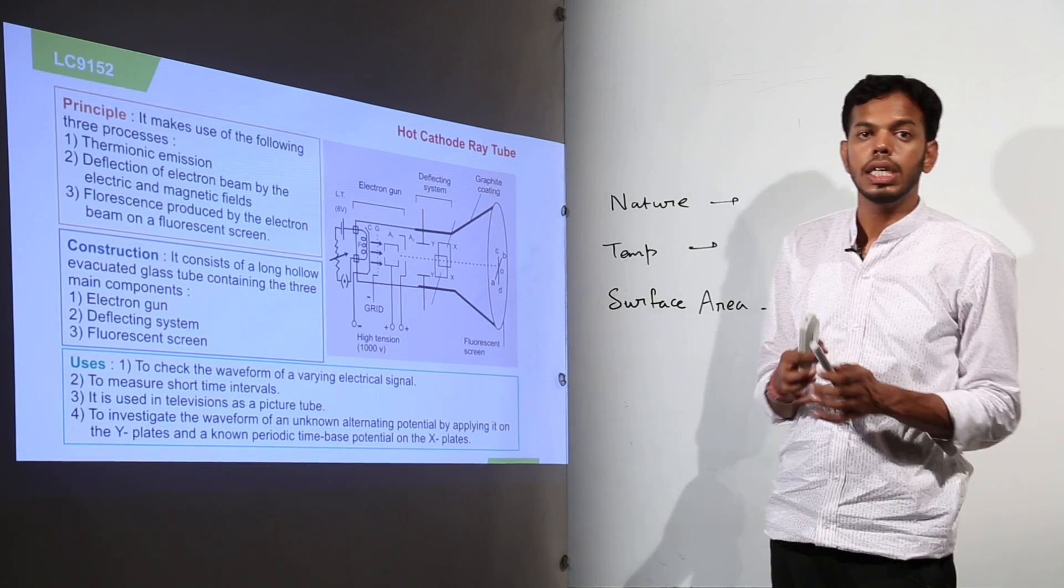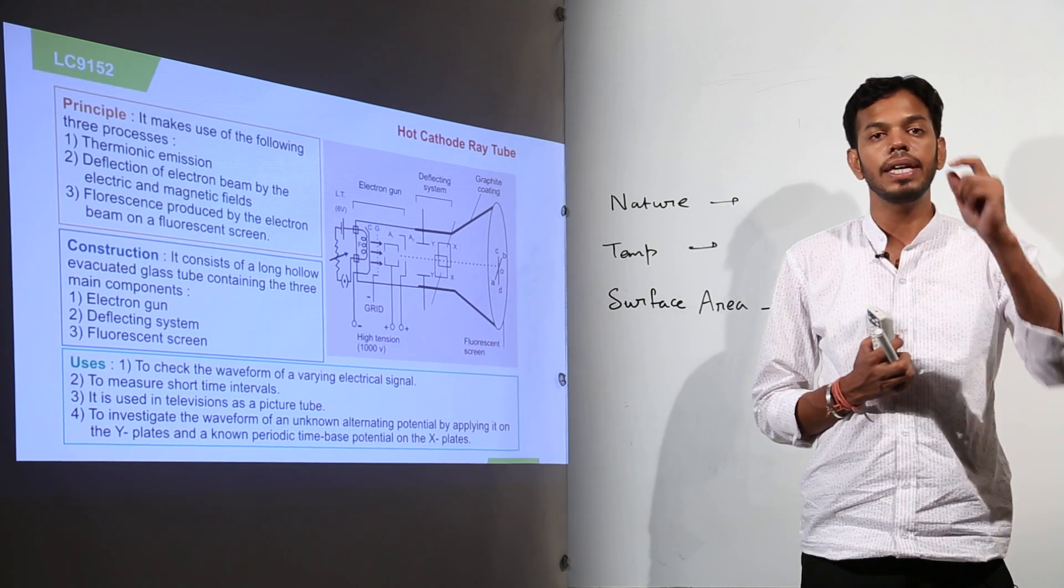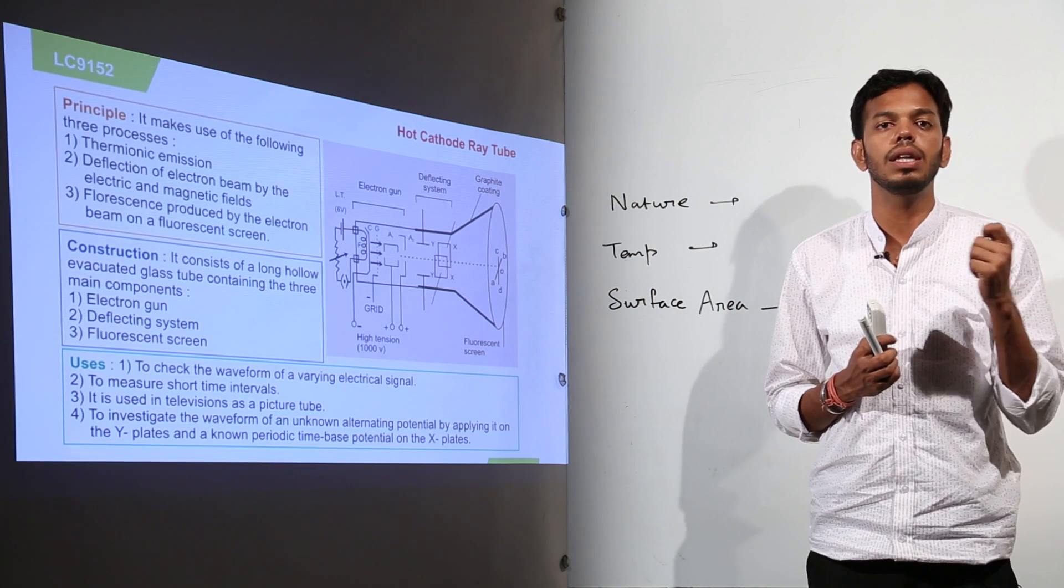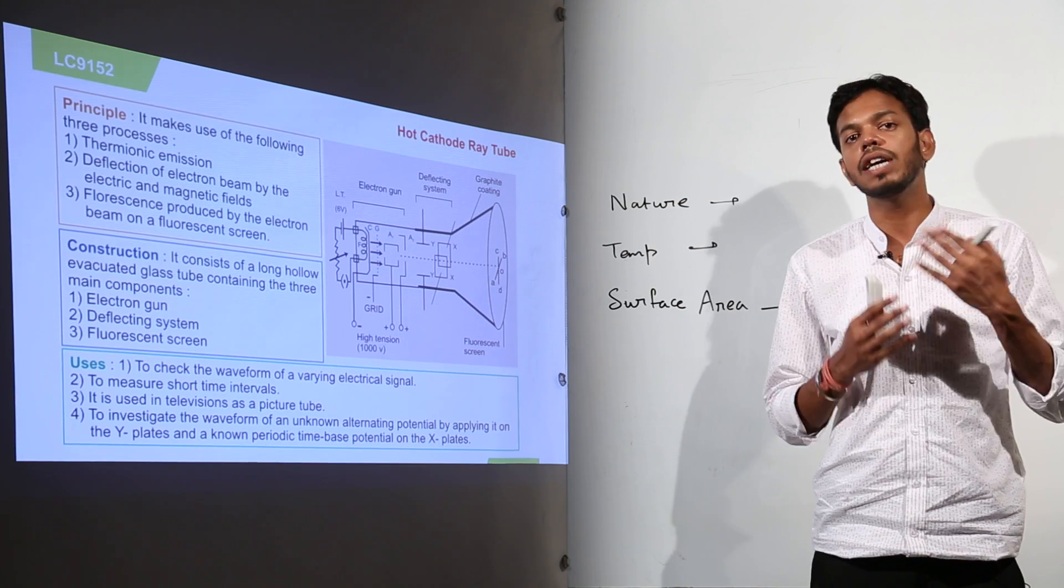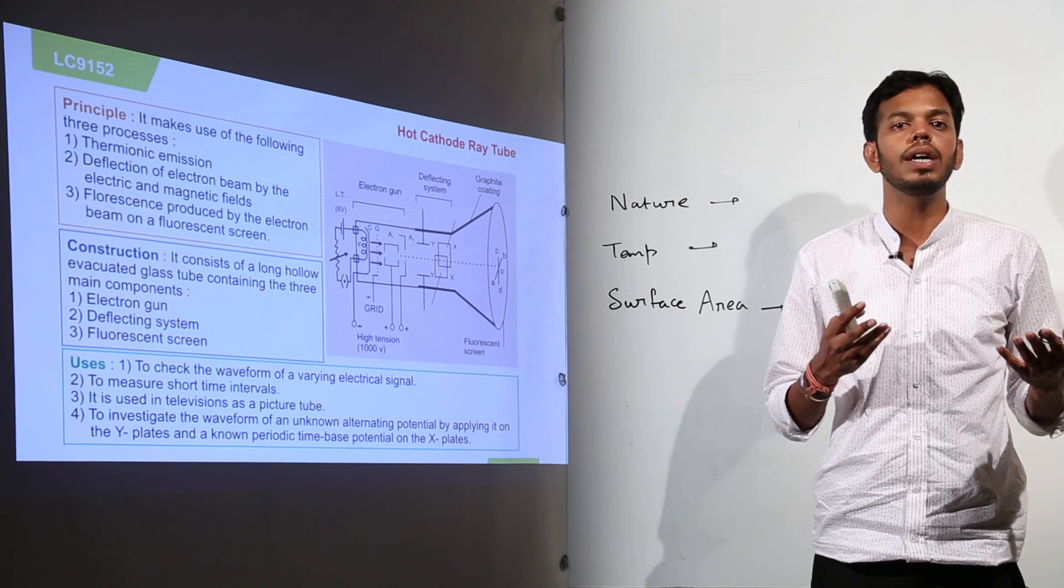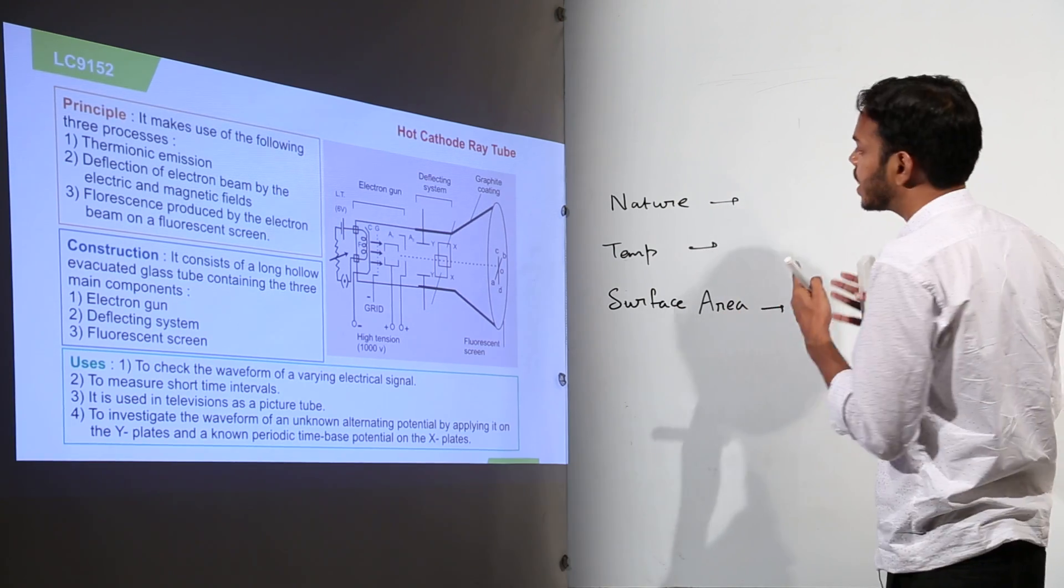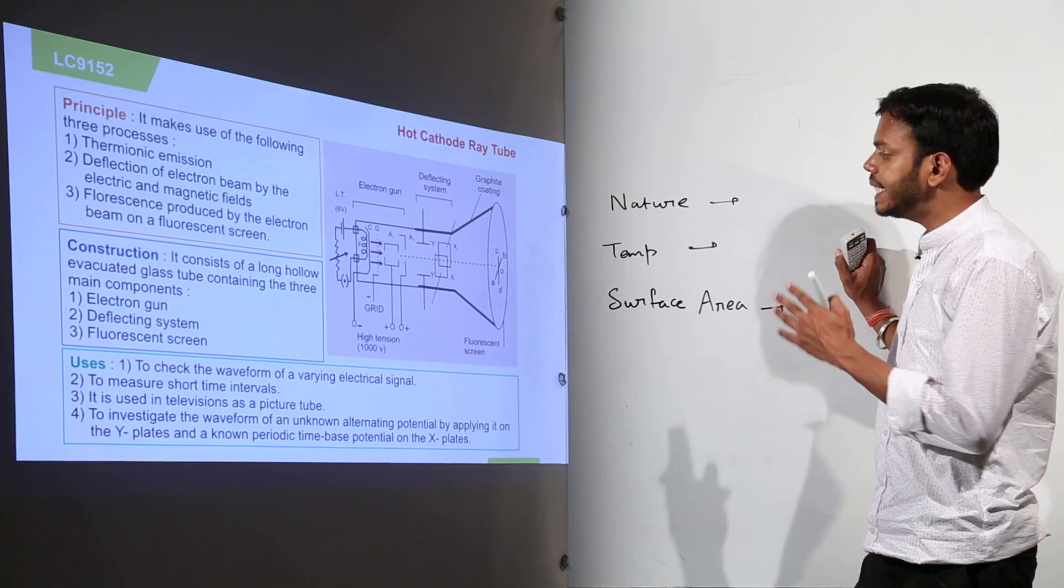This is very important point because suppose I take the tungsten filament very thin wire and in one case I am taking a bigger or thicker wire. The more the surface area of the outer part, more will be the emission of electrons. So surface area of the metal. These three are the factors.